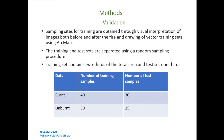Our training sampling sets were obtained through visual interpretation of images before and after the fire, and also using polygon vector shapefiles provided by the Victoria database as training samples. Our training and test sets were separated through a random sampling procedure, whereby two-thirds of the total area were classified as training samples and one-third as test samples.